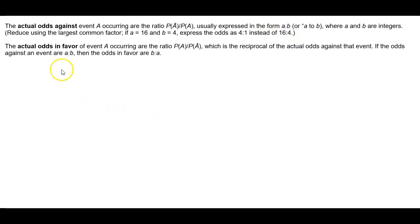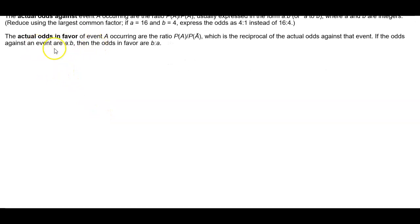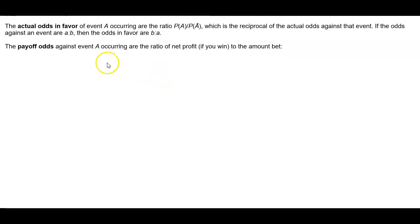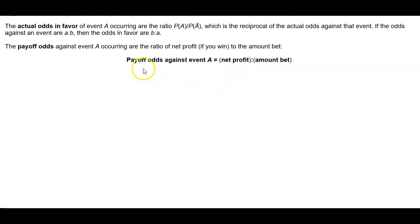The actual odds in favor of event A occurring are the ratio of the probability of event A divided by the probability of the complement of event A, which is the reciprocal of the actual odds against that event. If the odds against an event are A to B, then the odds in favor are B to A. The payoff odds against event A occurring are the ratio of the net profit if you win to the amount bet.